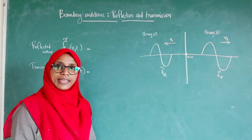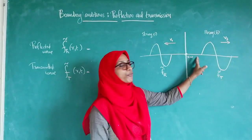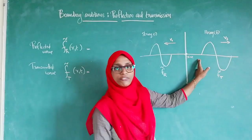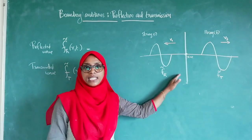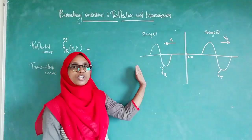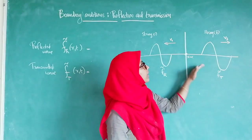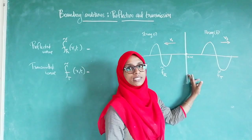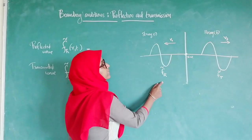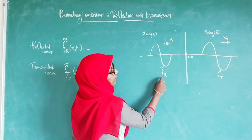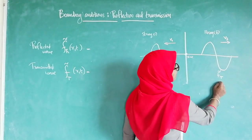When the incident wave reaches the node or the boundary between string 1 and string 2, a portion of this wave is reflected back along the negative X direction across string 1, and the remaining part is transmitted in the positive X direction along string 2. The reflected wave is represented as F_R and the transmitted wave is represented as F_T.